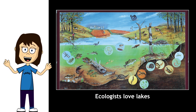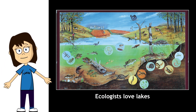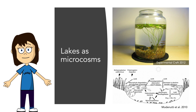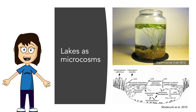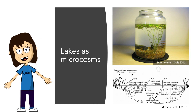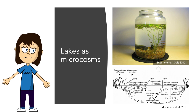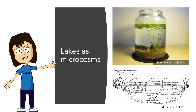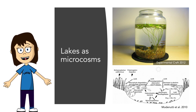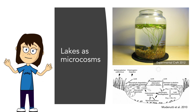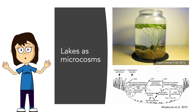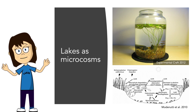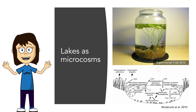Why are lakes probably disproportionately popular in the field of ecology? Well, one reason is that early on, lakes gained notoriety for being considered microcosms of larger ecosystems. Lakes were thought to be pretty isolated in their boundaries — compared to a forest, which maybe stretches on forever, lakes, especially small lakes, have very distinct boundaries. So it was thought to be a lot easier to study all of the processes going on in a lake.